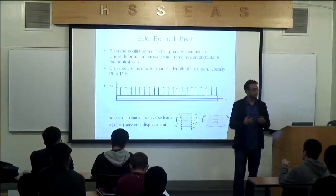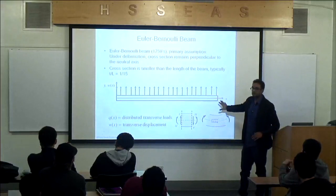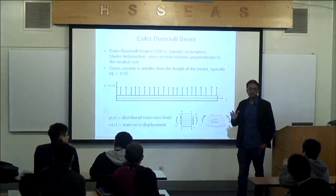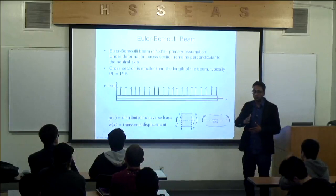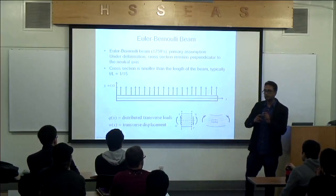It only depends on the x coordinate along the length of the beam. This is an assumption that Euler-Bernoulli made: the normal remains normal after deformation — the cross-section remains normal to the neutral axis after deformation. That assumption is really true for very long beams, on the order of t over length of 1/15 or so.